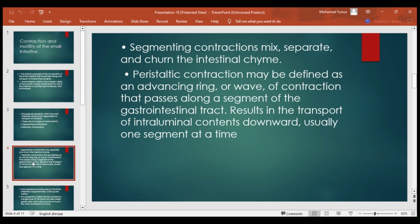Peristaltic contraction may be defined as the advancing ring or wave of contraction that passes along a segment of the gastrointestinal tract. It results in the transport of intraluminal contents downward, usually one segment at a time, from the small intestine down towards the large intestine.